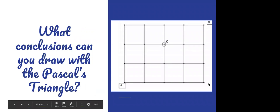What conclusions can you draw with Pascal's Triangle? So say I'm starting from home and there's different ways I can get to easy mark.